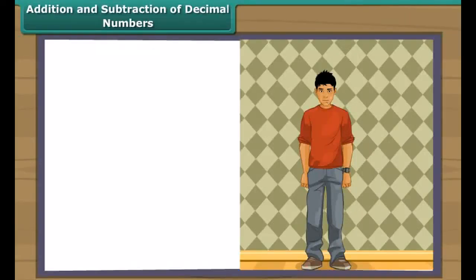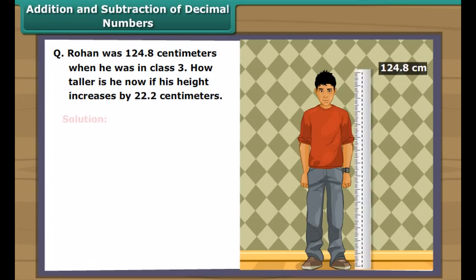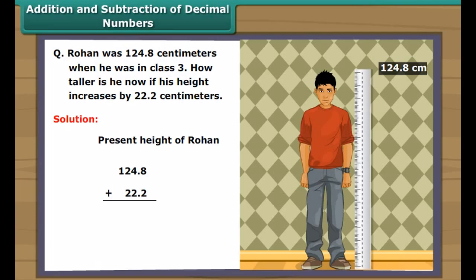Addition and subtraction of decimal numbers: Rohan was 124.8 cm in class 3. If his height increases by 22.2 cm, the height of Rohan equals 124.8 cm + 22.2 cm. Remember, while adding the numbers, the decimal point of one number lies exactly below that of the first. We add digits at the right side of the decimal first, then the left side. The sum of 8 and 2 gives 10; write 0 and carry 1. The sum of 1, 4 and 2 gives 7, and 2 and 2 gives 4. Thus, the height of Rohan is 147.0 cm.